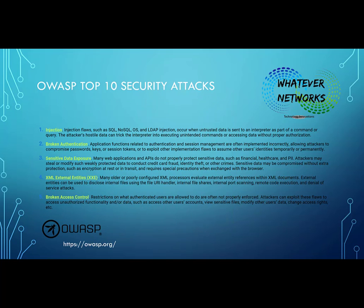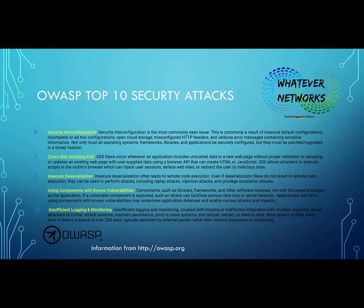Number six is security misconfiguration, and it's a commonly seen and easy-to-make issue. Think about passwords left at default, or a management network sitting on the same network as your internet-facing IP — that could be an issue. This is commonly a result of insecure default configurations, incomplete or ad hoc configurations, open cloud storage, misconfigured HTTP headers, and verbose error messages containing sensitive information. Operating systems, frameworks, libraries, and applications must be secured, patched, and upgraded in a timely fashion.